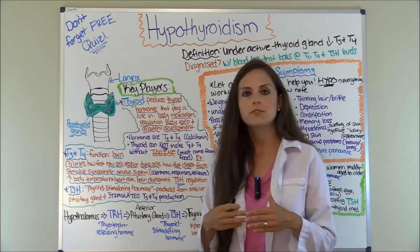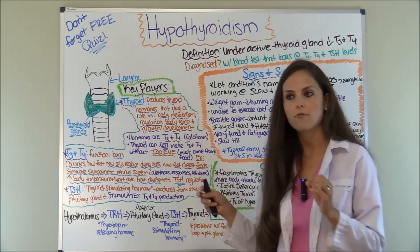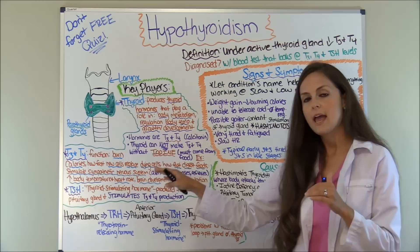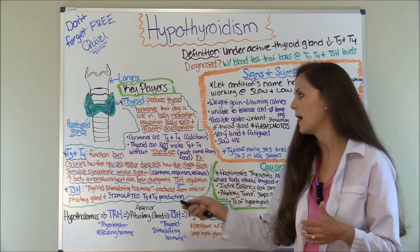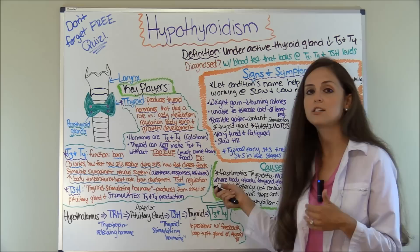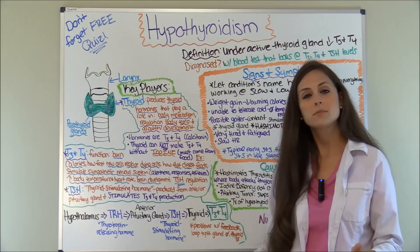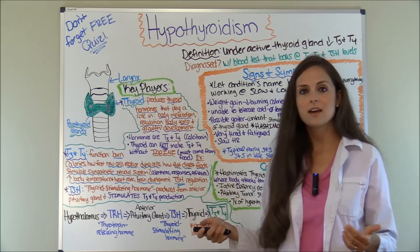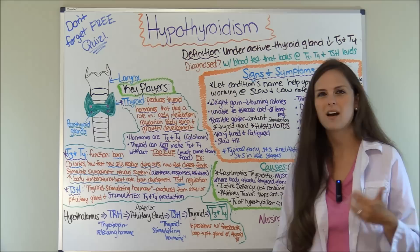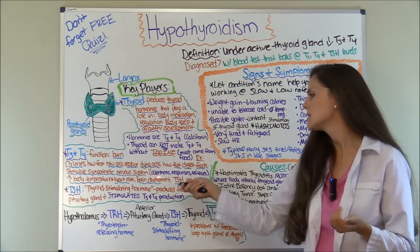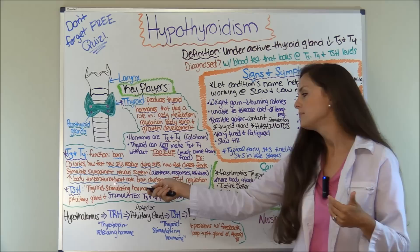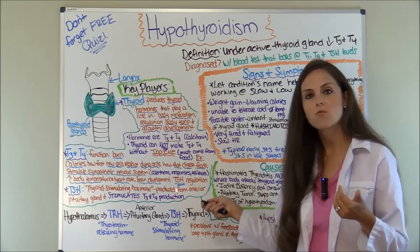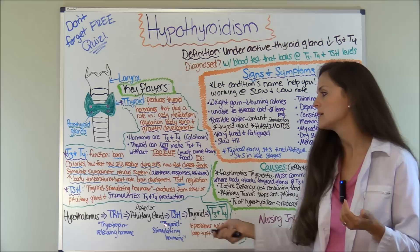Let's talk about the functions of T3 and T4 normally, because if you don't have enough, these functions slow down. Normally T3 and T4 burn calories — without enough, you gain weight. They determine how fast new cells replace dying cells and how fast you digest food — with hypothyroidism, food moves slowly, causing constipation. They stimulate the sympathetic nervous system — without enough, you'll be drowsy and lethargic with slow reflexes. They keep body temperature up — without enough, you'll feel cold. They also regulate heart rate, brain development, and TSH regulation.